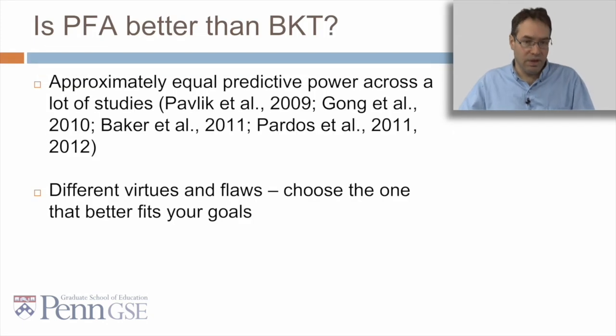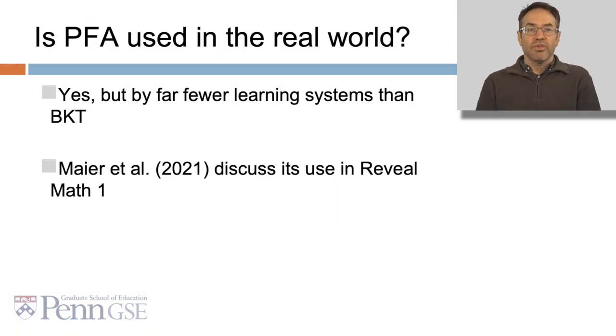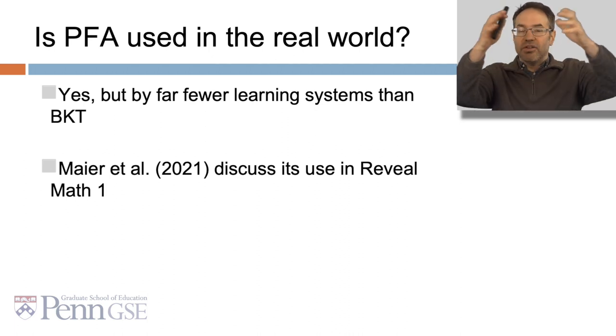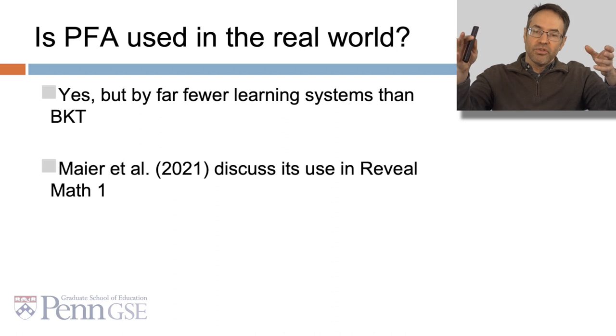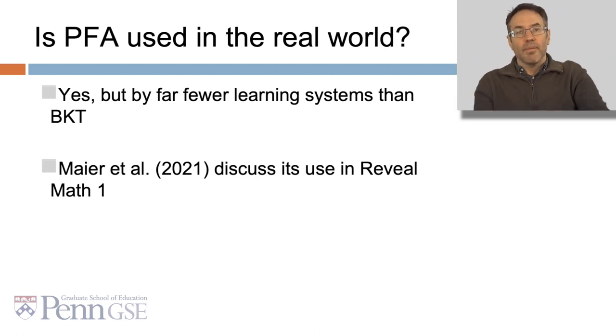So is PFA better than BKT? Actually, it turns out that they have approximately equal predictive power across a lot of studies. There's different virtues and flaws for the two algorithms, so choose the one that better fits your goals. Is PFA actually used in the real world? The answer is yes, but far less often than BKT. Meyer et al. discussed its use in RevealMath1. But compared to BKT, which is used in dozens and dozens of systems, PFA is a relatively uncommon algorithm.